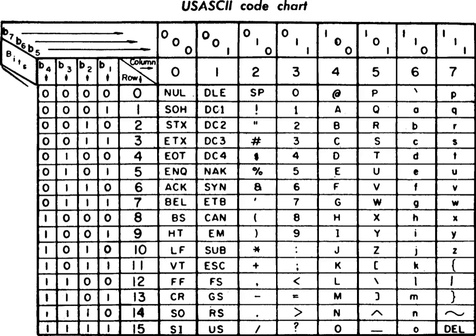95 of the encoded characters are printable; these include the digits 0 to 9, lowercase letters a to z, uppercase letters A to Z, and punctuation symbols. In addition, the original ASCII specification included 33 non-printing control codes which originated with teletype machines. Most of these are now obsolete, although a few are still commonly used, such as the carriage return, line feed, and tab codes. For example, lowercase 'i' would be represented in the ASCII encoding by binary 1101001.